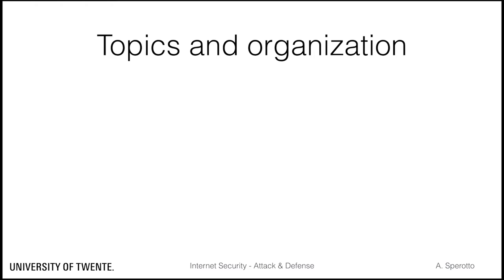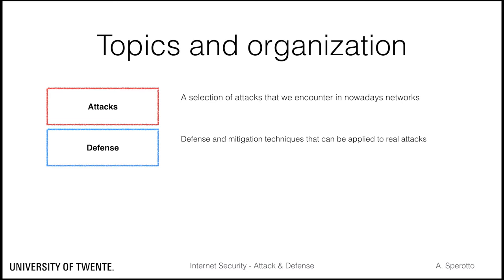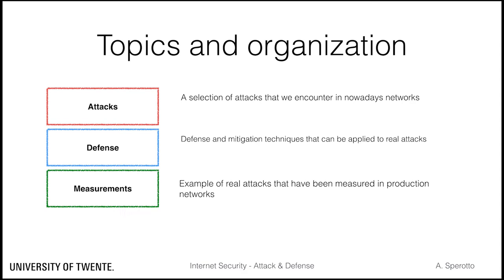Each lecture in this module has three main ingredients. The first is attacks — we will cover a selection of attacks that we encounter in current networks. The second ingredient is defense: we will introduce and reason about defense and mitigation techniques that can be applied to real attacks. The last ingredient is measurements. Network measurements is the approach we will take in this course to observe and characterize attacks, giving examples of real attacks that have been measured in production networks.